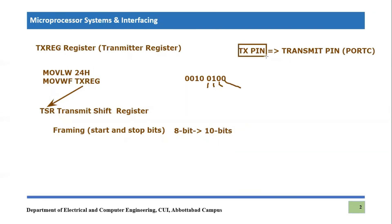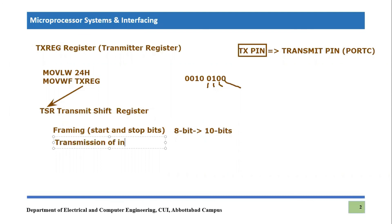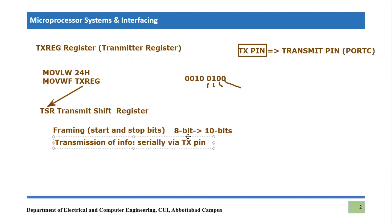All of this happens automatically — you won't need any special programming for it. So the two functions of the TSR register are: first, framing, which means adding start and stop bits to the original information; and second, serial transmission of that information via the TX pin. These are the two important functions performed by the TSR register, and the programmer is not involved in these procedures.